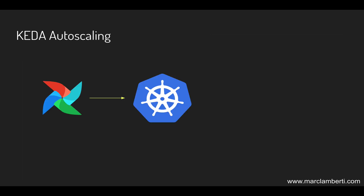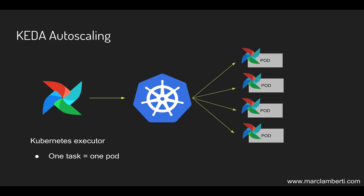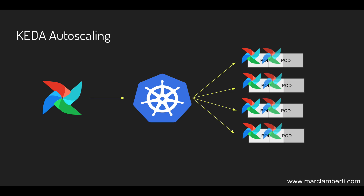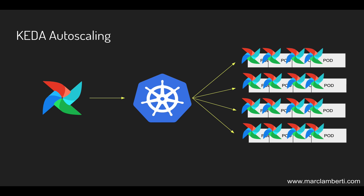Now let's talk about scaling Apache Airflow. There's a chance you are using the Kubernetes executor, as it allows you to scale down to zero and avoid wasting resources, unlike with the Celery executor. Basically each time a task is executed a pod is created — one task, one pod. But there are two main drawbacks: first, this can quickly become very expensive in terms of resources and money, since in a high-scale use case you may end up with thousands of pods running at the same time.